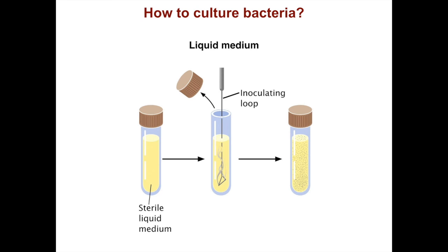So how do we culture bacteria? There are two basic ways: either in liquid or on a solid substrate. In liquid medium, you have sterile liquid that you inoculate with bacteria from another source, and then the bacteria rapidly divide. In the case of E. coli, they divide about every 20 minutes under optimal nutritional, temperature, and oxygenation conditions. The sterile liquid medium must have all the nutrients necessary to support bacterial growth.